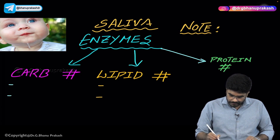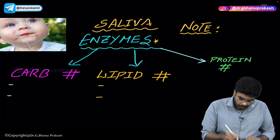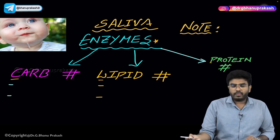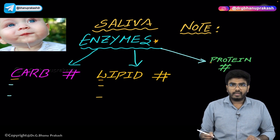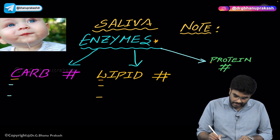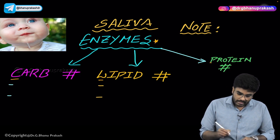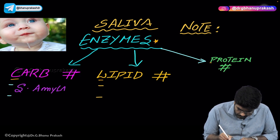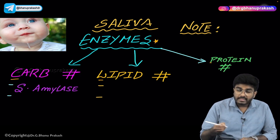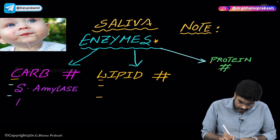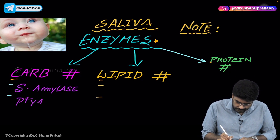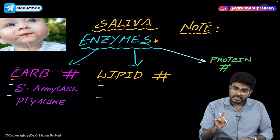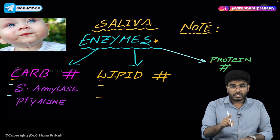Are there any enzymes in saliva for carbohydrate digestion, lipid digestion, or protein digestion? For carbohydrate digestion, yes — there are enzymes present. The enzyme is called salivary amylase, also known as ptyalin. Salivary amylase or ptyalin is an enzyme present in saliva that helps in the digestion of carbohydrates.